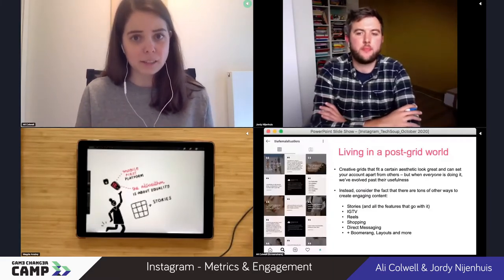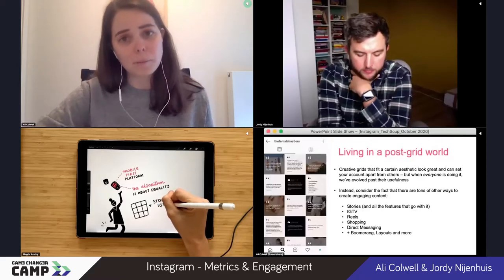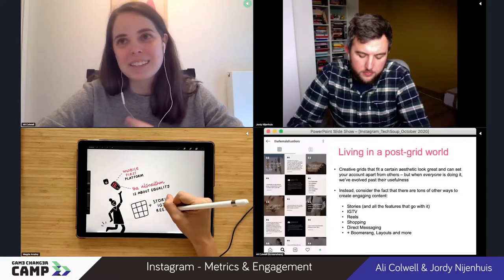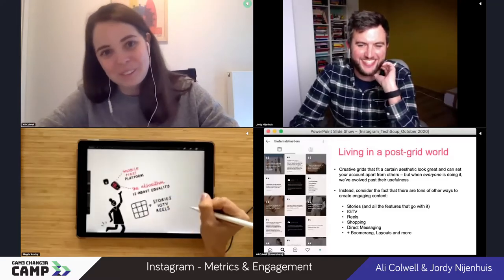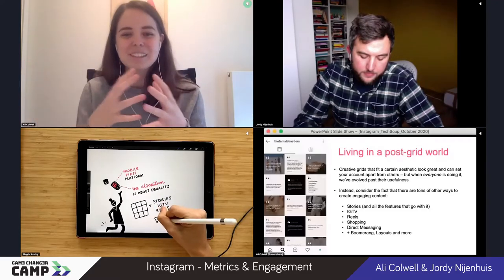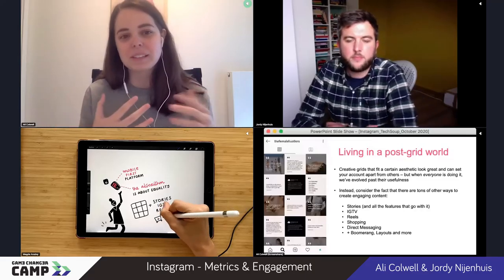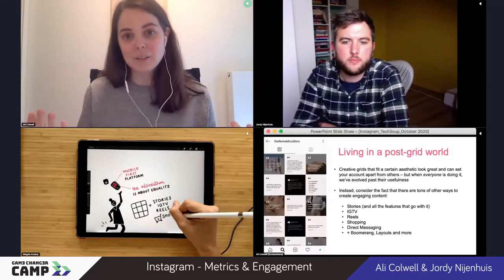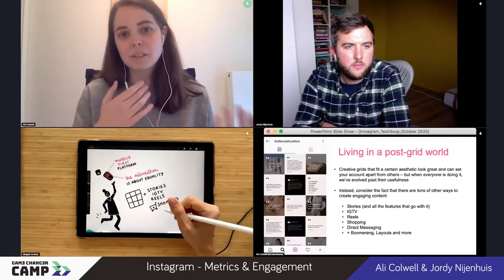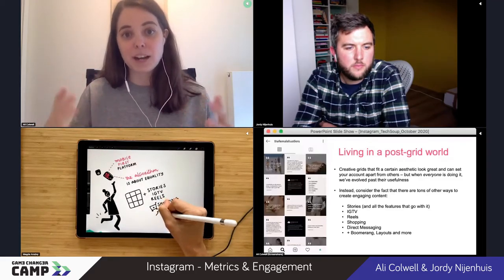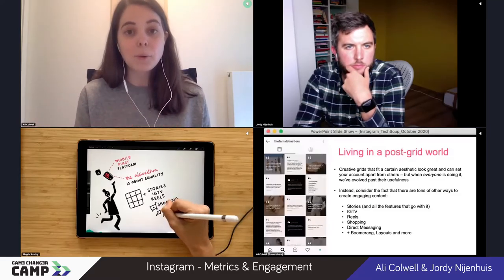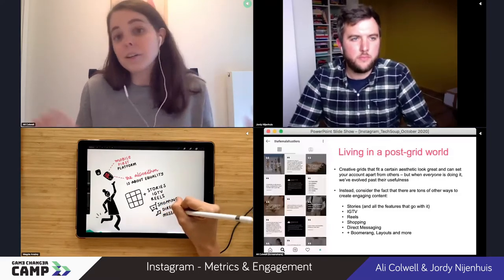We have IGTV — vertical videos that are more long-form on Instagram. We have Reels, which is Instagram's copy of TikTok. I've seen more TikToks on Reels than actual unique Reels. Stories are very similar to Snapchat. Instagram has been very good at copying other people's ideas and putting it into one visual platform. We also have shopping, direct messaging, and other apps such as Boomerang and Layouts to add flair and movement to your content. The important takeaway is that these features exist because Instagram wants the experience to be varied, fresh, and exciting — so we need to take advantage of that as communicators.